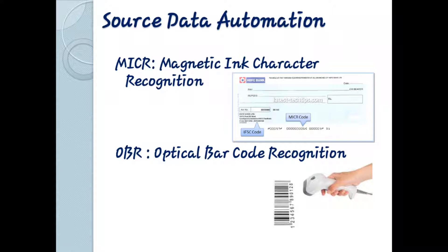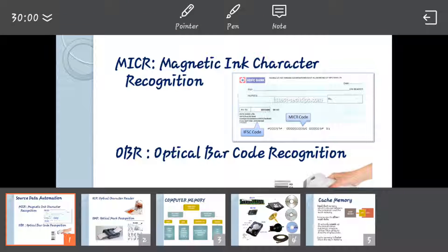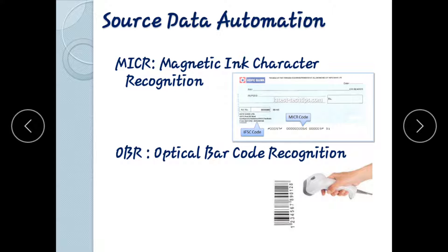In this video, we will talk about source data automation in computer memory. Source data automation is automatic data source. This is called MICR — Magnetic Ink Character Recognition. This is the daily life bank checkbook with MICR code.